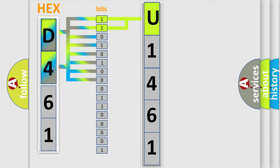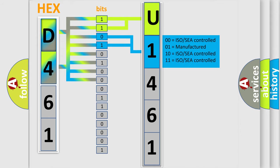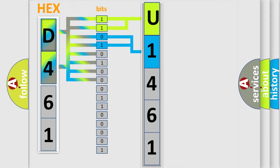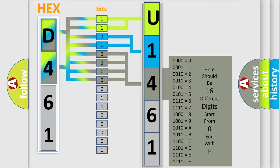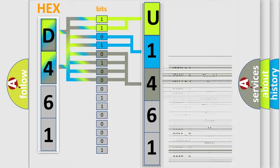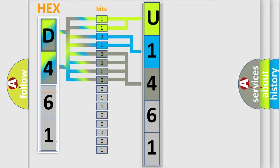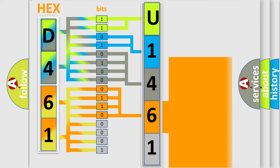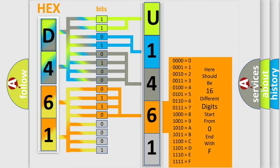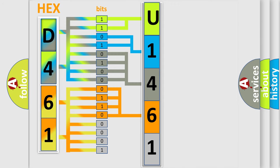The next two bits determine the second character. The last bits of the first byte define the third character of the code. The second byte is composed of a combination of eight bits. The first four bits determine the fourth character of the code, and the combination of the last four bits defines the fifth character. A single byte conceals 256 possible combinations.